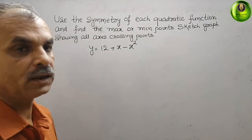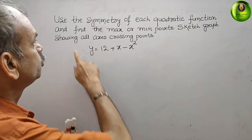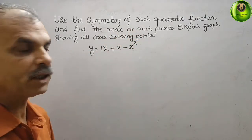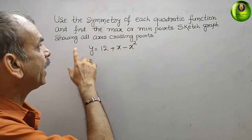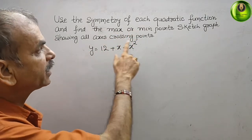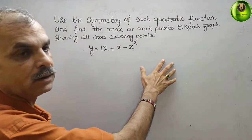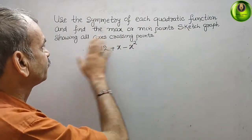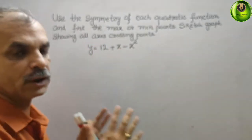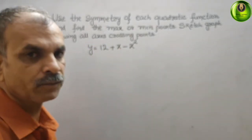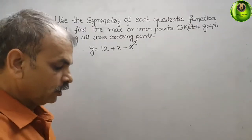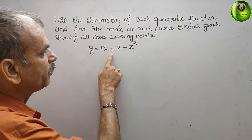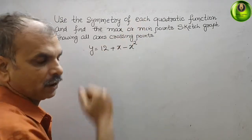The question asks us to use the symmetry of each quadratic function to find the maximum or minimum points, then sketch a graph showing all axis crossing points. The given function is y equal to 12 plus x minus x squared.